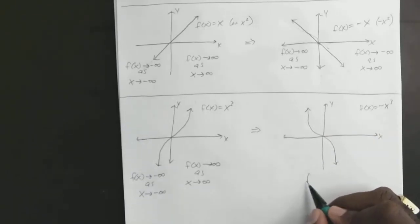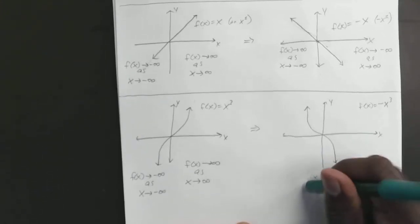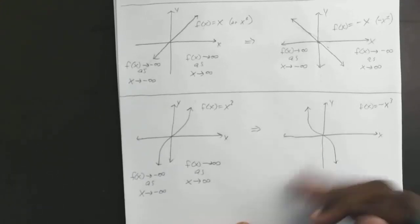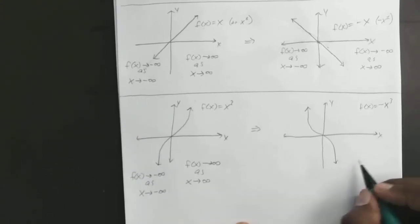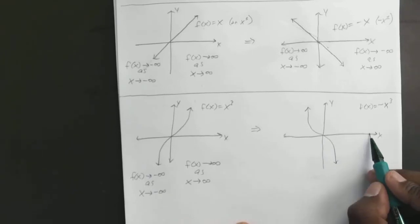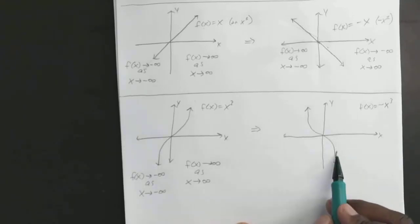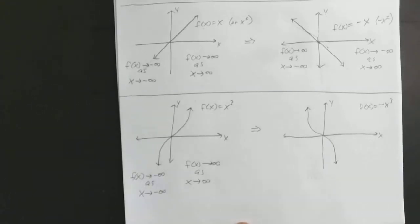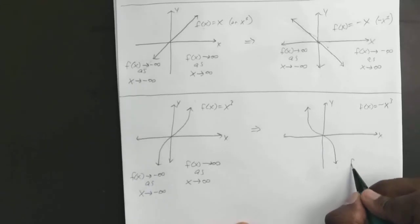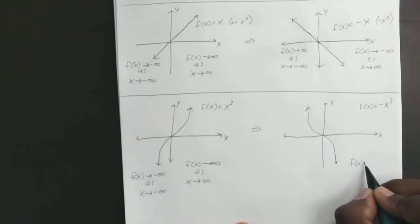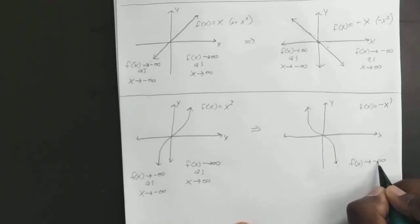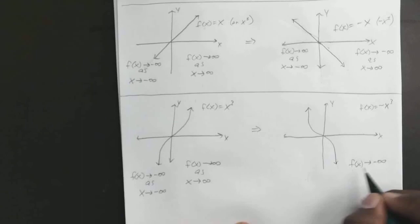Now for this one, as X gets bigger and bigger, Y is getting smaller and smaller, so f(x) approaches negative infinity.